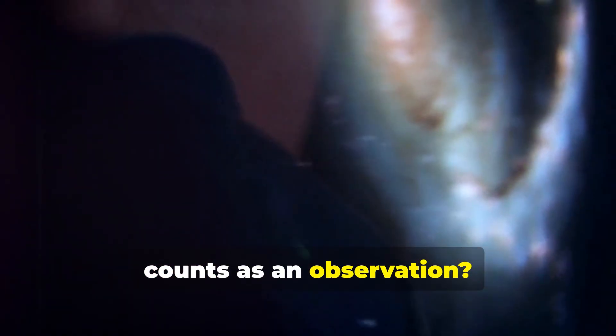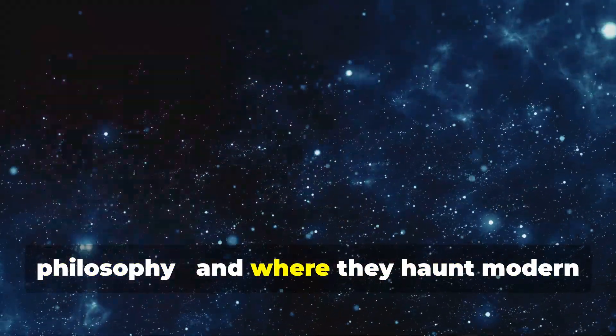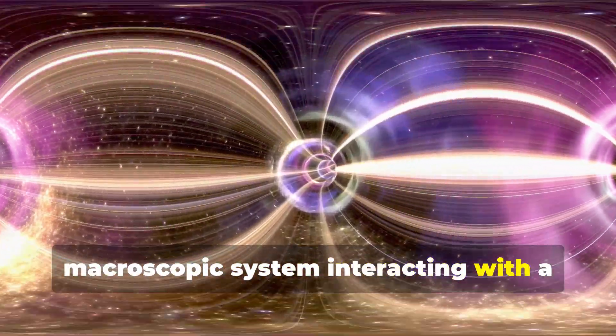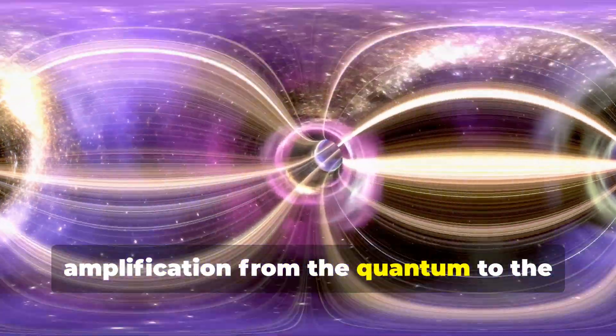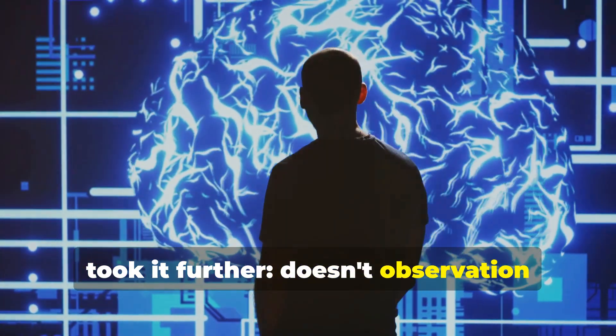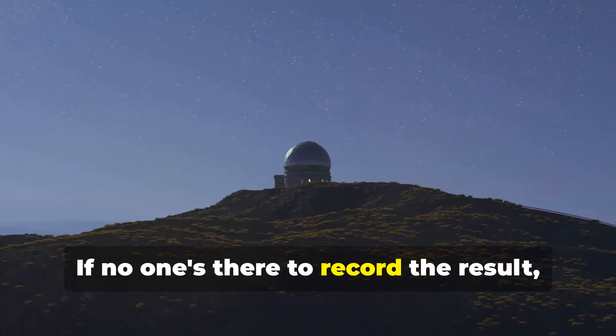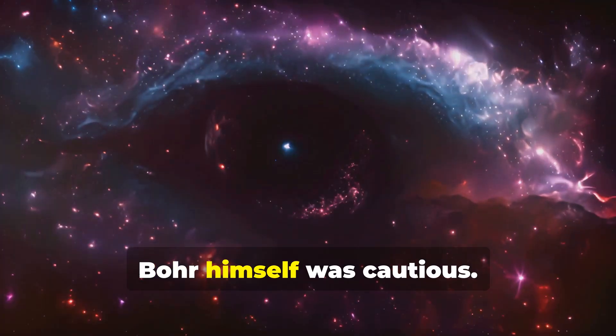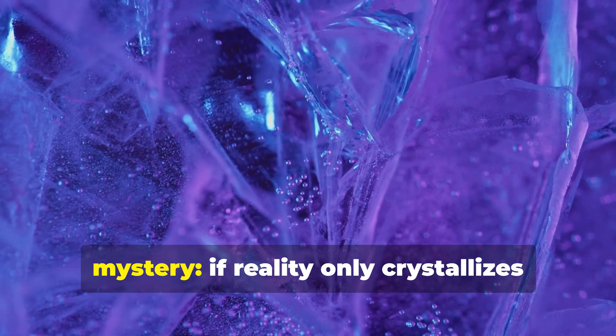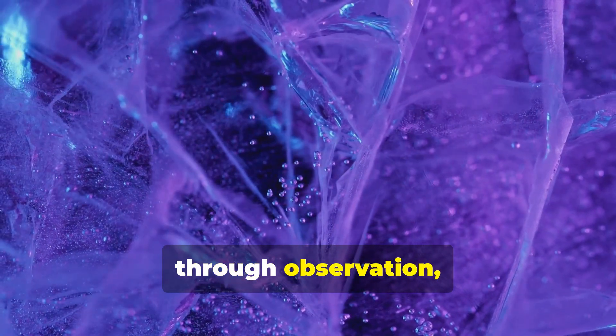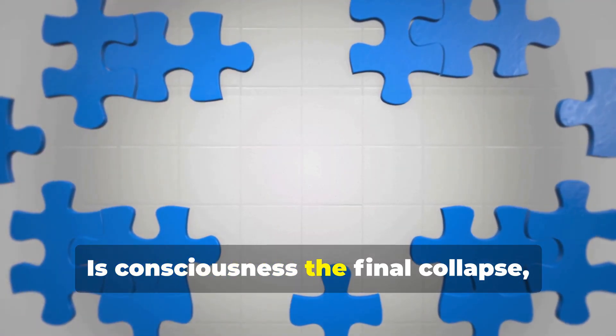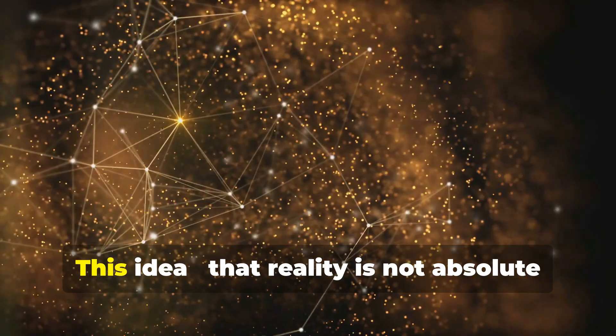But what exactly counts as an observation? This is where Bohr's ideas ripple into philosophy and where they haunt modern physics to this day. In Bohr's view, the act of measurement involves a macroscopic system interacting with a microscopic system, a kind of amplification from the quantum to the classical world. But others, like Eugene Wigner and John von Neumann, took it further. Doesn't observation ultimately require consciousness? If no one's there to record the result, is there a result at all? Bohr himself was cautious. He resisted the idea that mind was separate from matter, but his framework leaves open a deep mystery. If reality only crystallizes through observation, and observation always happens from a point of view, what is the role of awareness itself? Is consciousness the final collapse, the last piece in the puzzle of reality?